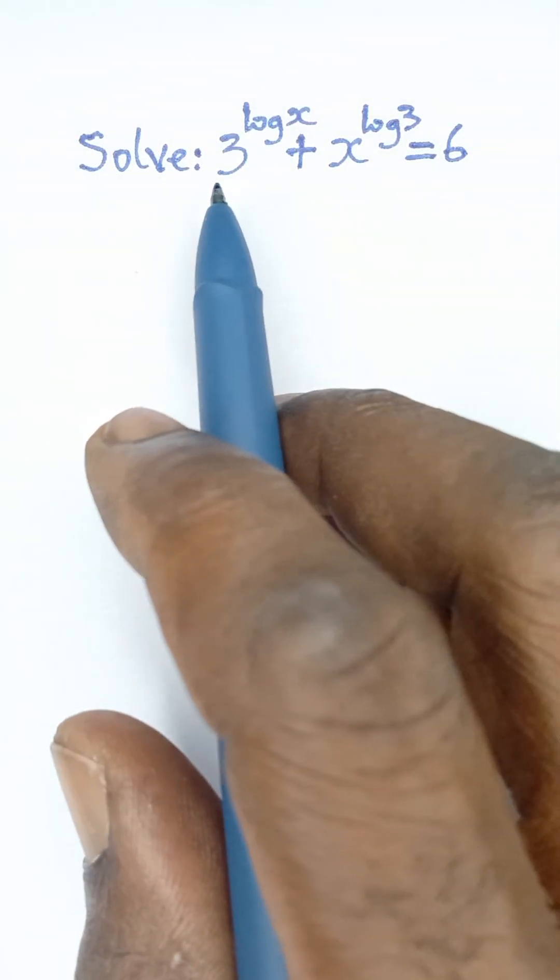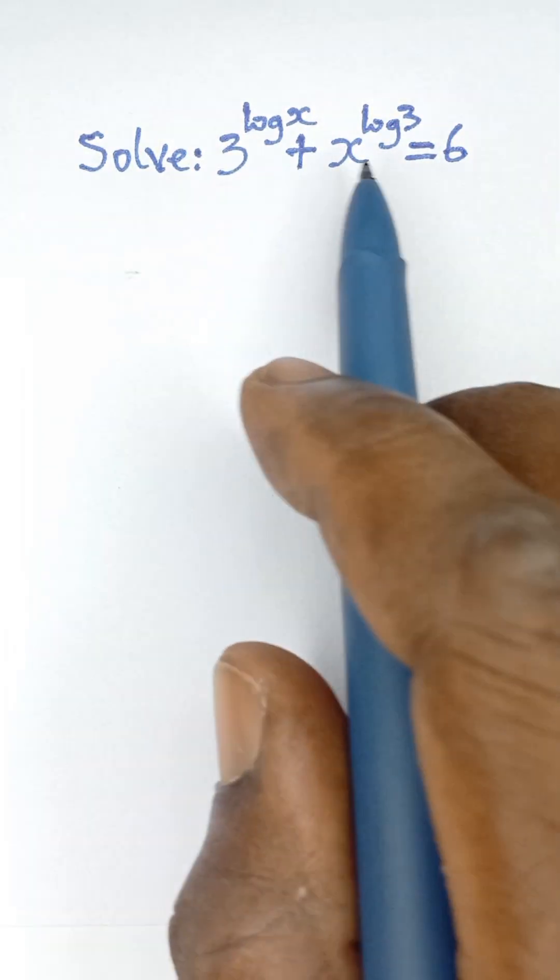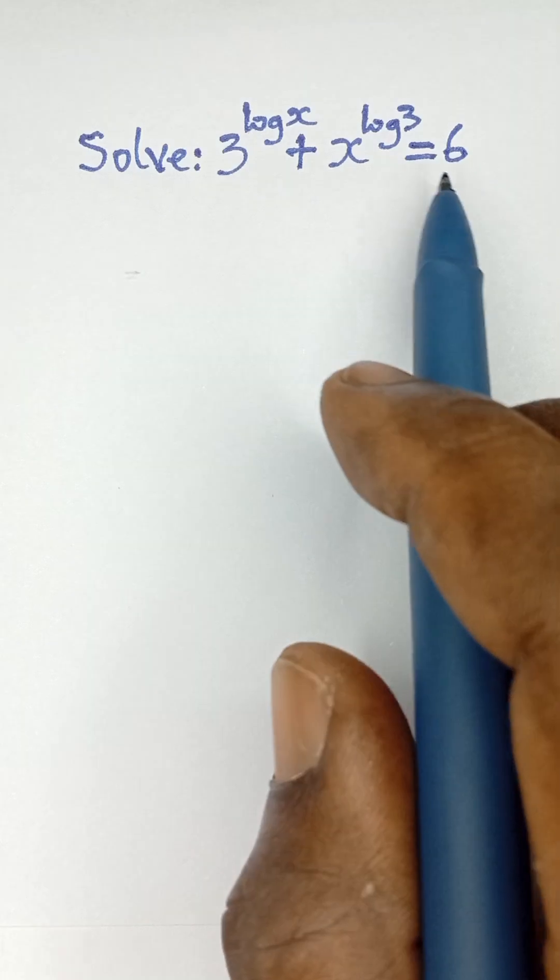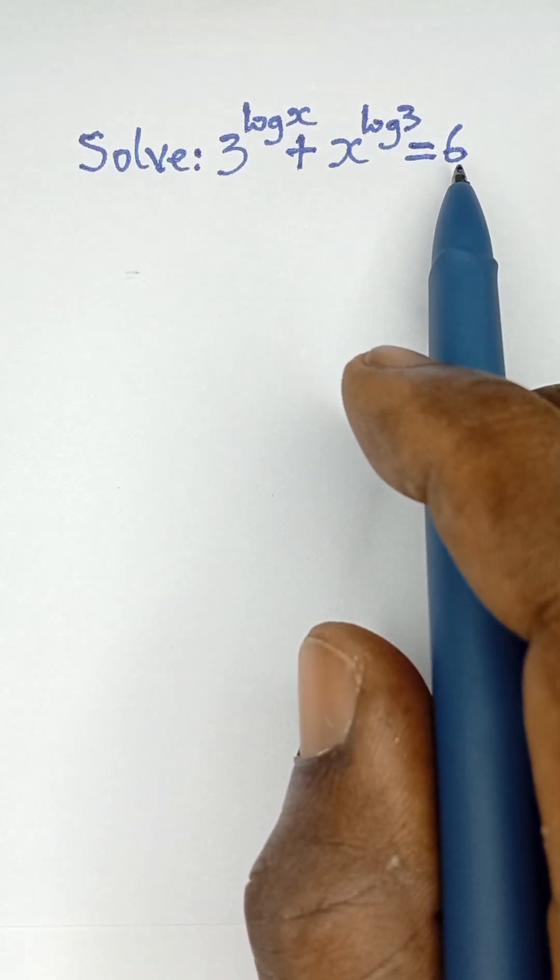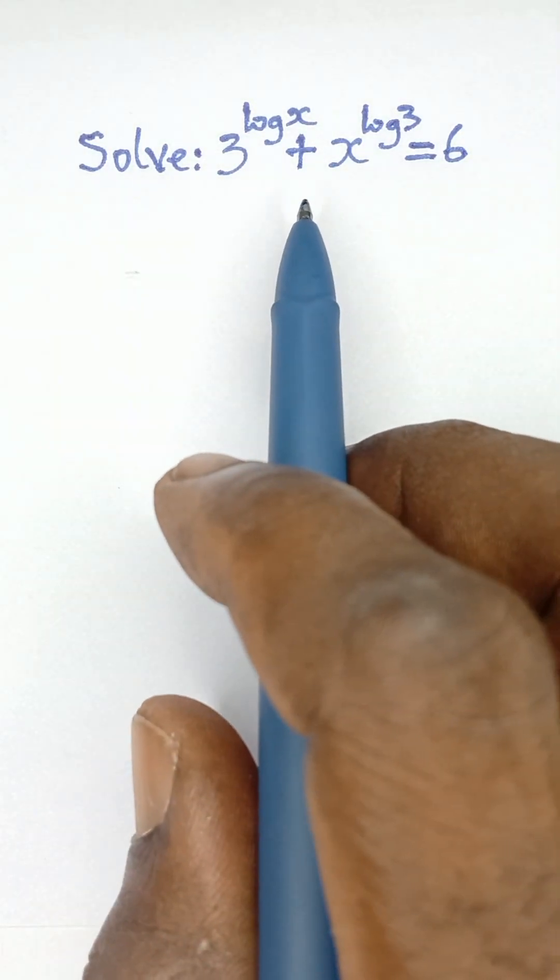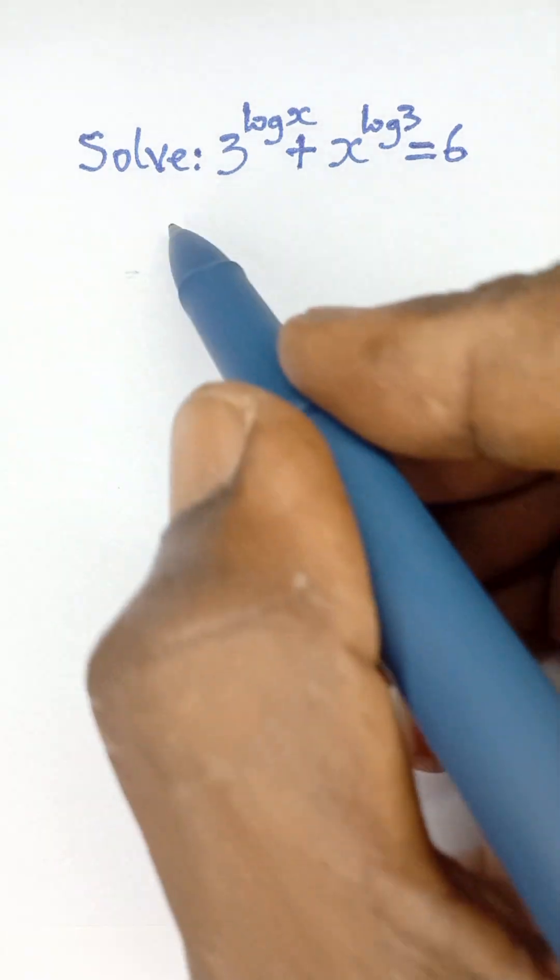Solve 3 raised to the power log x plus x raised to the power log 3 equals 6. To solve this, we should remember a rule that says